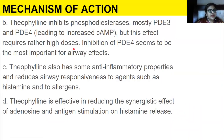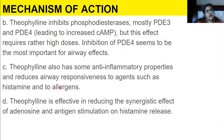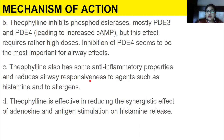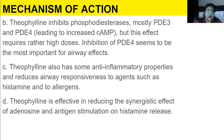Theophylline inhibits phosphodiesterases, though this effect requires rather high doses. Inhibition of phosphodiesterase-4 seems most important for airway effects. Theophylline also has anti-inflammatory properties and reduces airway responsiveness to agents such as histamine and allergens. Theophylline is effective in reducing the synergistic effect of adenosine and antigen stimulation on histamine release.